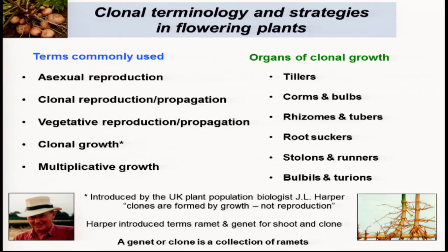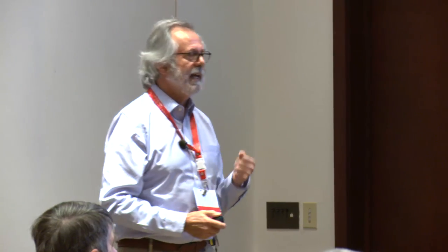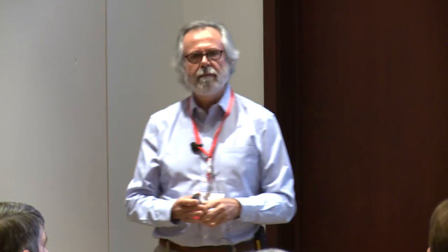Now what about clonality? There are different ways species can reproduce asexually. I'd like to dispose quite quickly of apomixis — plants can reproduce asexually via seed through this process, and there's a lot of interest in its evolution in flowering plants.